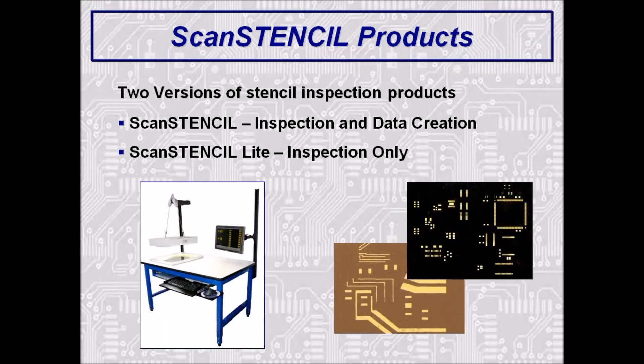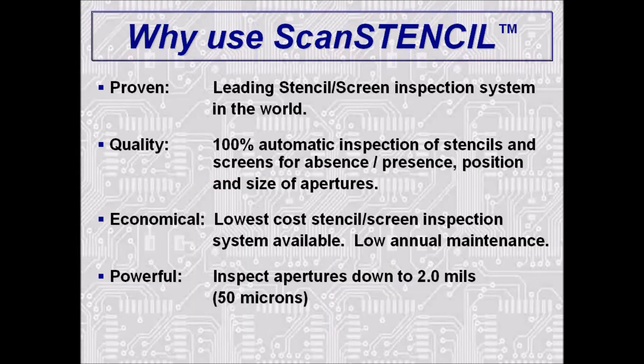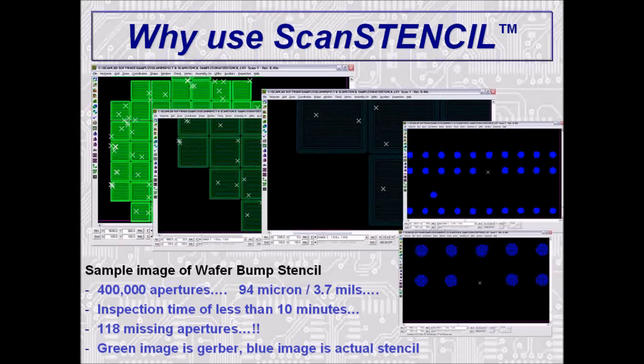There are two versions of ScanStencil available. ScanStencil for both inspection and data creation, and if your budget does not allow for it at this time, an even lower-cost system is available: ScanStencil Light for inspection only. ScanStencil Light can be easily upgraded to the full ScanStencil product at any time by simply purchasing an additional software module.